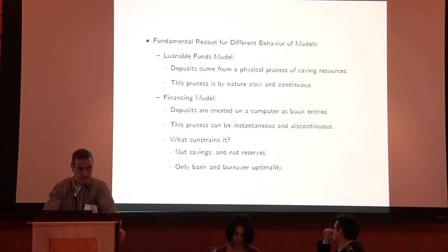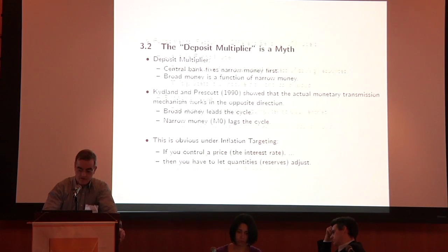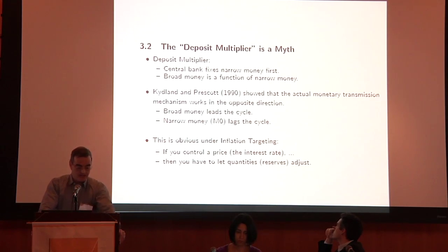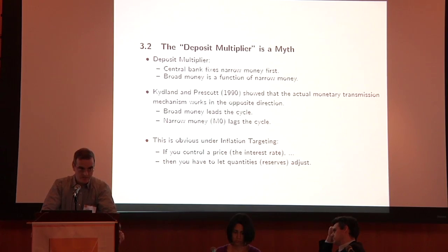The only thing that constrains credit is bank and borrower optimality conditions. The bank solves a problem, credit supply is the outcome; the borrower solves a problem, credit demand is the outcome. Whatever enters these optimality conditions — including regulation — is what affects the quantity of credit in equilibrium. It's not like some quantity of saving could actually fix or determine the quantity of credit. The deposit multiplier is a myth — the story that the central bank fixes narrow aggregates and broad money follows by being re-lent. Killen and Prescott showed this doesn't work with data from the 1970s and 1980s in the United States: broad money leads the cycle, narrow money lags the cycle. When you do inflation targeting, if you control a price, you have to let the quantities — reserves — adjust.